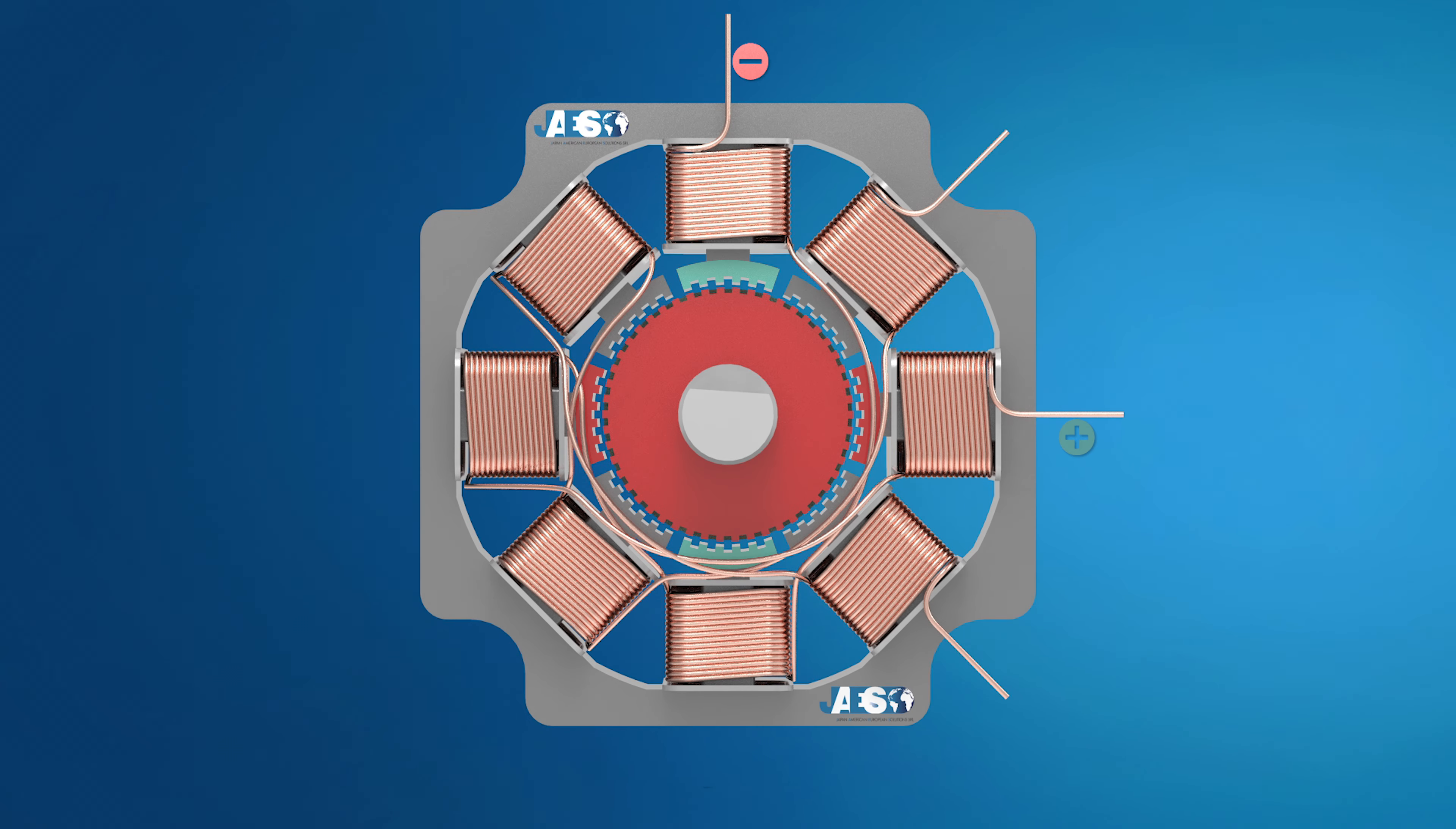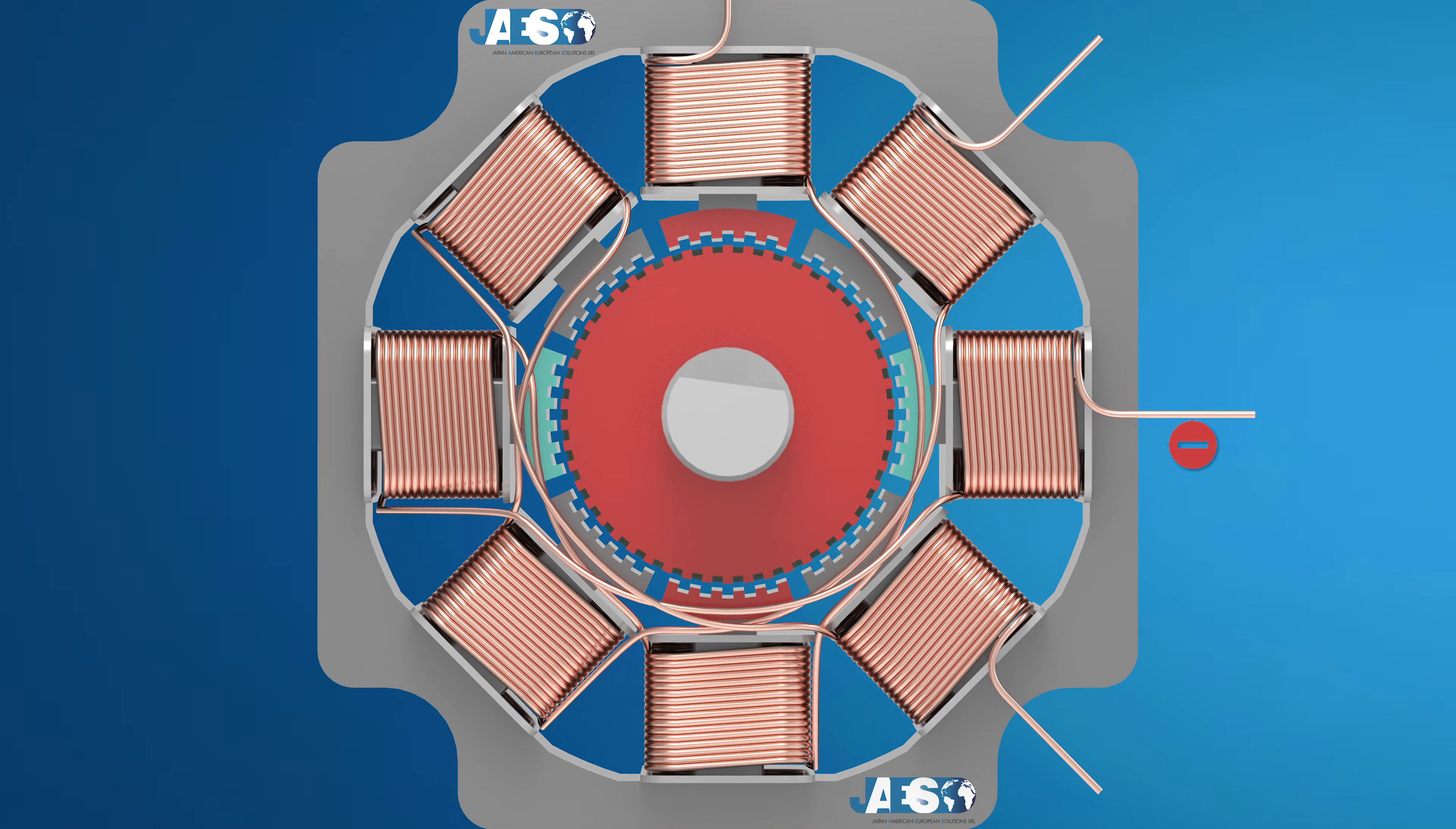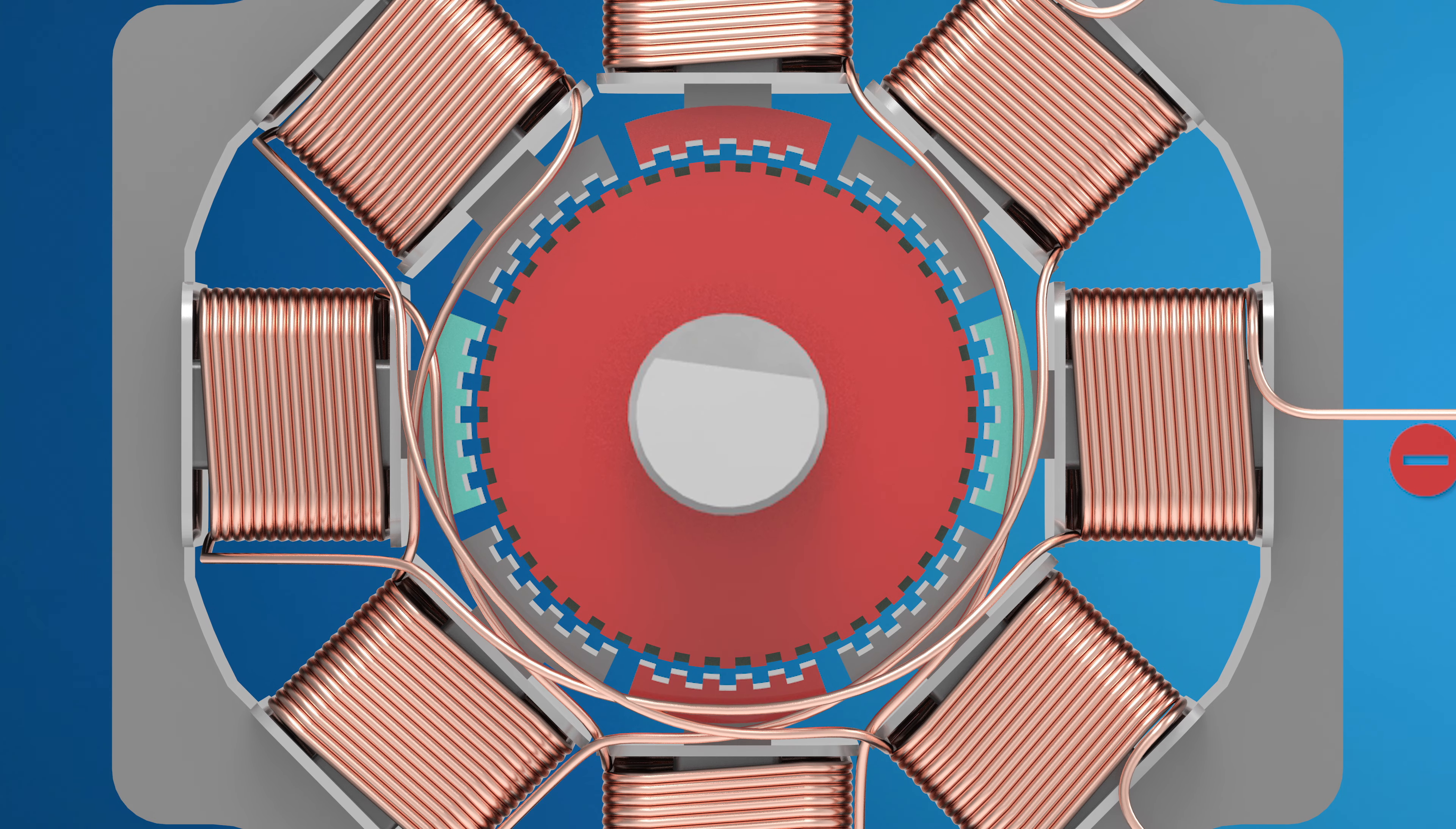The stator magnetic field switches 45 degrees within one step, while the rotor rotates only 1.8 degrees. That's because in the south pole of the magnet, the stator teeth in the north pole are attracted, while they are 90 degrees offset.